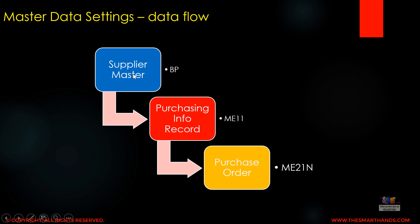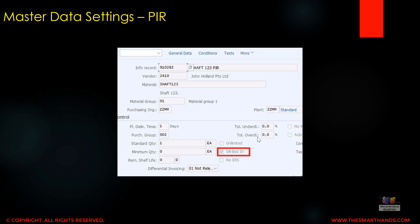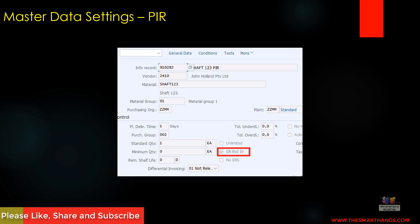At any master data level you can maintain this setting and it will propagate to the next level. If it's not maintained at a previous level you can maintain it at any level, but for a vendor that is non-goods receipt based, it's best to maintain it at the BP level so you don't need to remember to mark it at the info record or purchase order level. In the supplier master Fiori app, under the purchasing view, you can see the 'Goods Receipt Based Invoice Verification' checkbox. The same is available in the GUI screen under the purchasing data view.